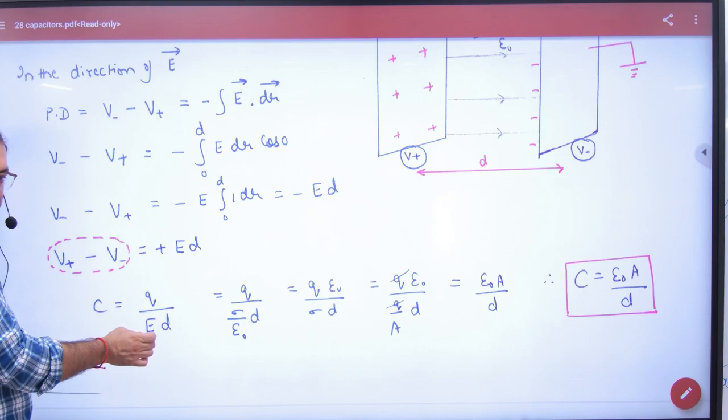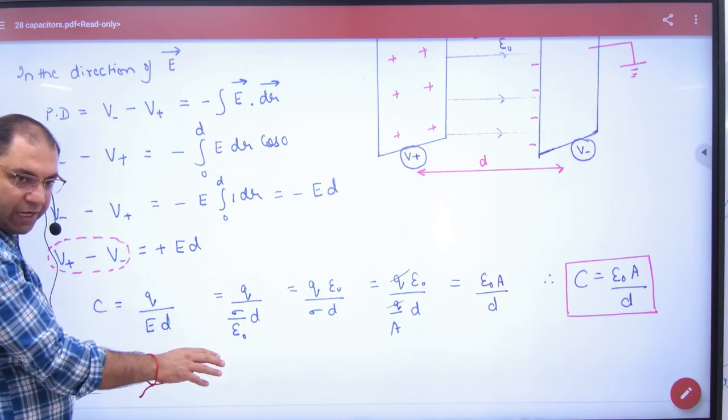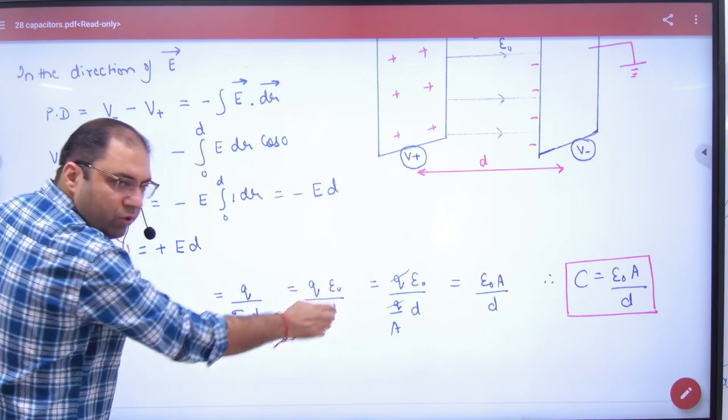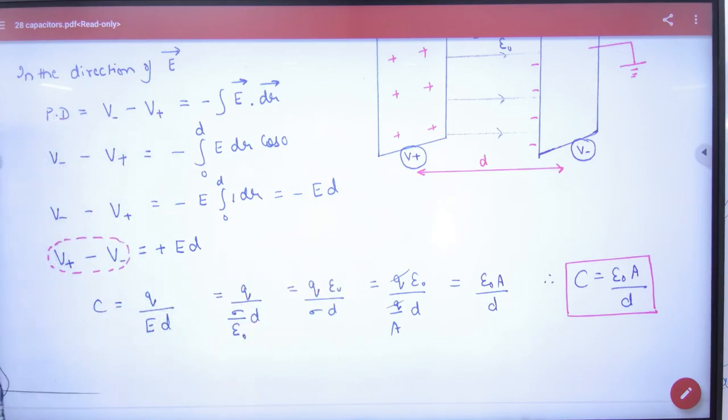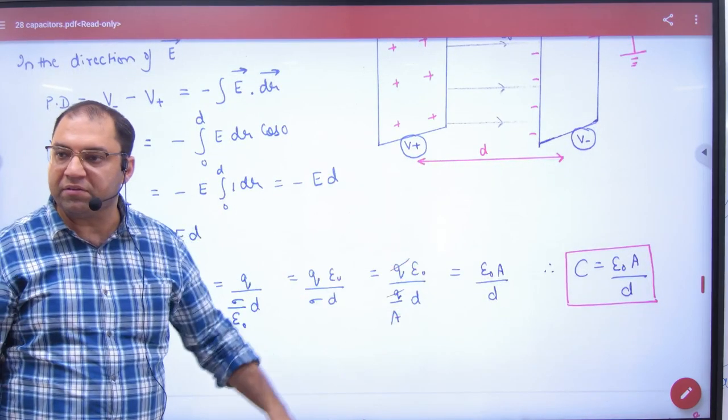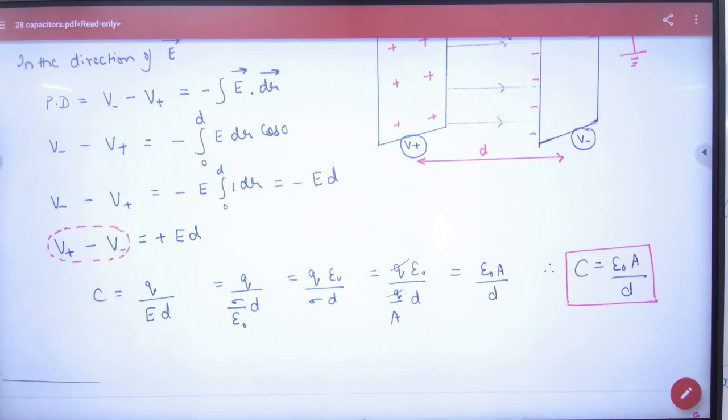In the expression for capacitance of a parallel plate capacitor, the formula is C = ε₀A/d.